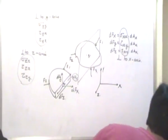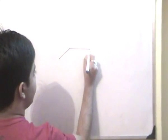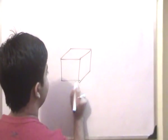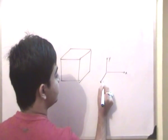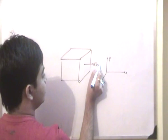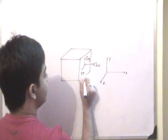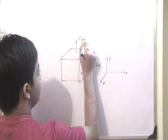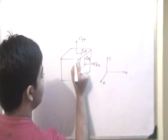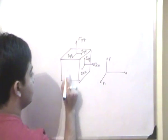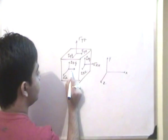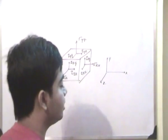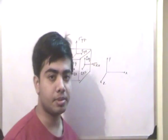Now I will simplify these nine stress components and represent them on a single cubic element. With X, Y, and Z axes, on the cube we have: Sigma XX, tau XY, and tau XZ on the X face; Sigma YY, tau YX, and tau YZ on the Y face; and Sigma ZZ, tau ZY, and tau ZX on the Z face. This is how we describe the general state of stress at a point.